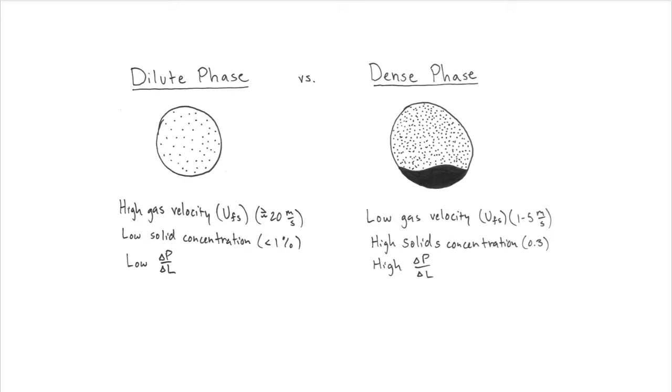Some issues with dilute phase is that it takes a lot more energy to get the gas to flow quickly enough, and less particles can be transported in a certain amount of time because of the concentration being so low. Because of this, systems that use dilute phase transport are relatively short.